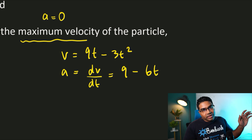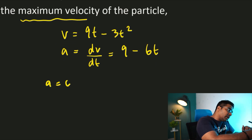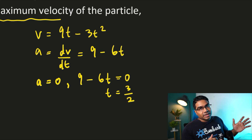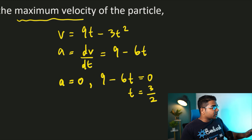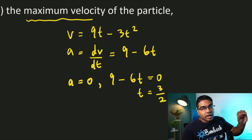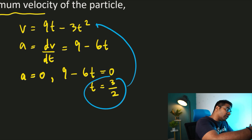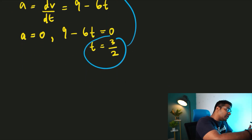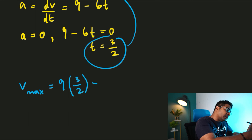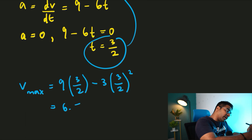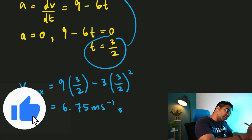Now we can substitute acceleration equals 0 into this formula. Setting a = 0 gives us 9 minus 6t = 0, so t = 3/2 seconds. This is the time at which the velocity is maximum. Since we have the time at which velocity is max, we substitute this back into our velocity equation. The maximum velocity v_max = 9(3/2) minus 3(3/2) squared, and the answer we get is 6.75 meters per second.